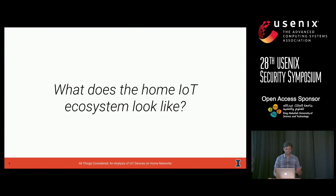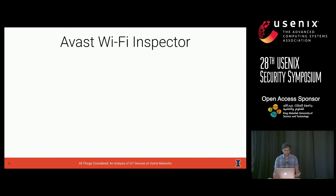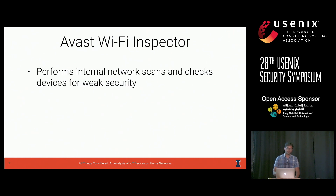In this talk and in this work, we sought to answer a core question: what does the home IoT ecosystem look like? We can't publicly scan for these devices, so we needed a different measurement perspective. To get that perspective, we partnered with Avast Software, a free antivirus provider whose home security software runs in millions of homes worldwide. As part of their package, Avast products come with a tool called Wi-Fi Inspector, which performs internal network scans and checks devices for indicators of weak security, alerting the user so they can address problems.